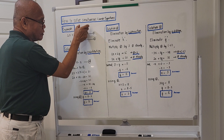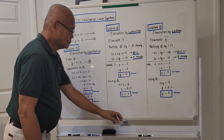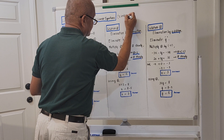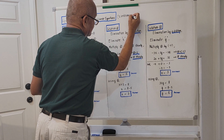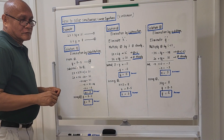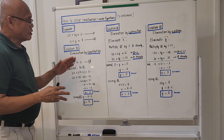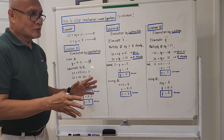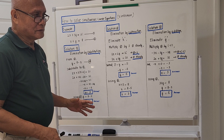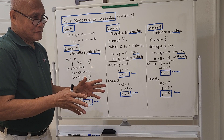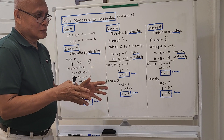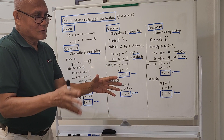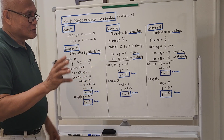My topic is how to solve simultaneous linear equations, and this is two unknowns. To illustrate the solution of simultaneous linear equations, I will present three solutions. For those who are starting up algebra or taking up engineering, it seems they were not taught how to solve the equation correctly. I am not saying that others are wrong, but this should be the proper way on how to teach simultaneous linear equations.